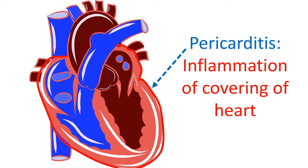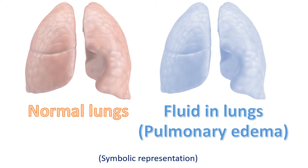Inflammation of the heart walls in rheumatic fever is known as rheumatic carditis. Occasionally, inflammation of the heart muscle and its covering can also occur in rheumatic fever. These are called rheumatic myocarditis and rheumatic pericarditis respectively. Pericarditis can cause chest pain in children with rheumatic fever. When there is severe damage to the heart walls in the initial stage, producing leaks, some of them may develop heart failure with breathlessness. Breathlessness occurs when the heart is not able to pump out blood well, leading to back pressure in the lungs and collection of fluid in the lungs known as pulmonary edema.